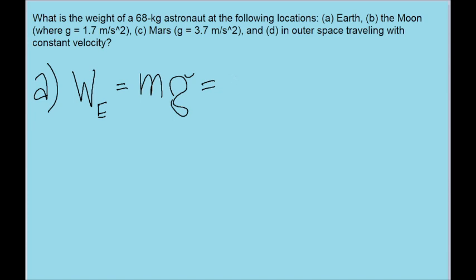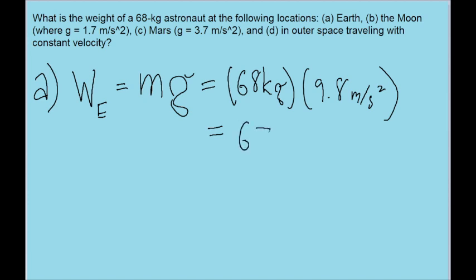So for part A of the problem, we just take the mass, which is given to us as 68 kilograms, and multiply it by 9.8 meters per second squared. So if we put that into our calculator, we get a weight of about 670 Newtons. So that is the weight in part A.